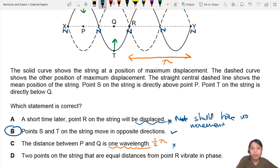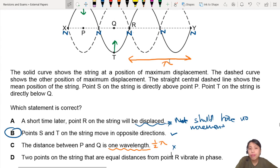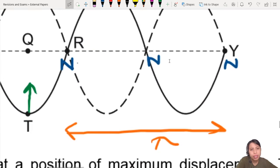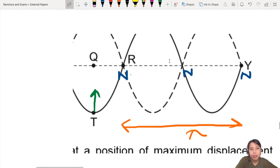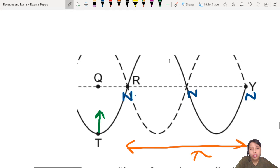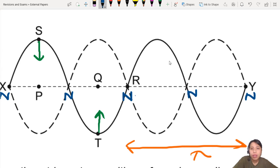D: Two points on the string that are equal distance from point R vibrate in phase. Equal distance from R vibrate in phase. Excuse me, something wrong there. Let me show you. So if we say R is the center point of it, where will all the particles be moving? On the right of R, the particles will all be moving down together. To the left of R, they will all be moving up.